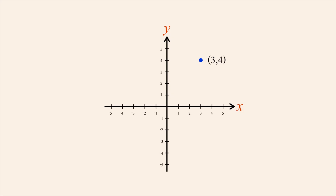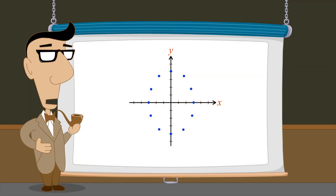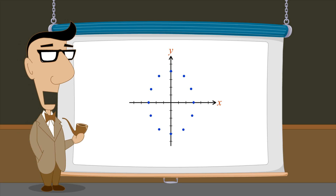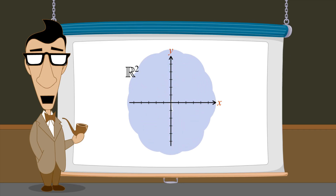Of course, a binary relation can include more than one ordered pair. So the group of points we showed in the beginning is a visual representation of a binary relation on R, the set of real numbers. As we saw, a binary relation between two sets is a subset of their Cartesian product, so this binary relation is a subset of the Cartesian product of the set of real numbers with itself, R², which consists of every point in the xy-plane.